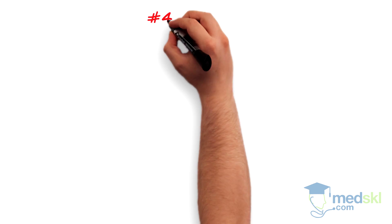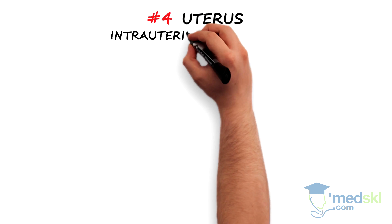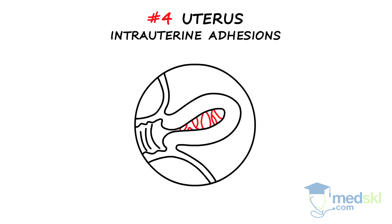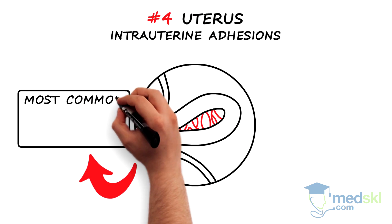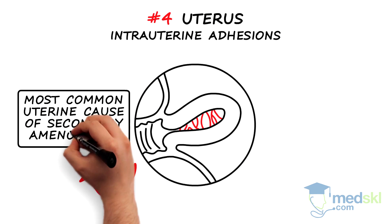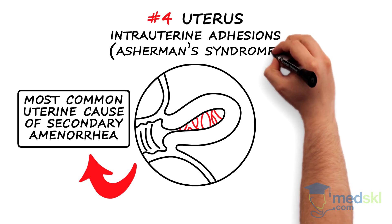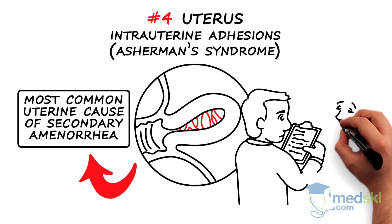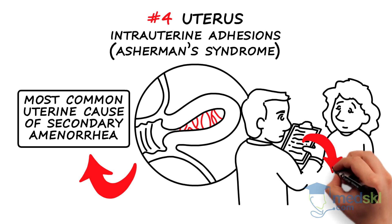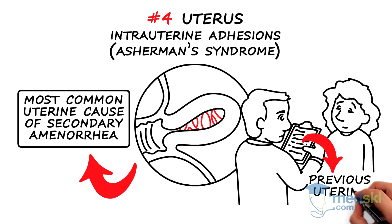Number 4: Uterus. Intrauterine adhesions are the most common uterine cause of secondary amenorrhea. This is otherwise known as Asherman syndrome and should be considered in those who have had previous uterine curettage.